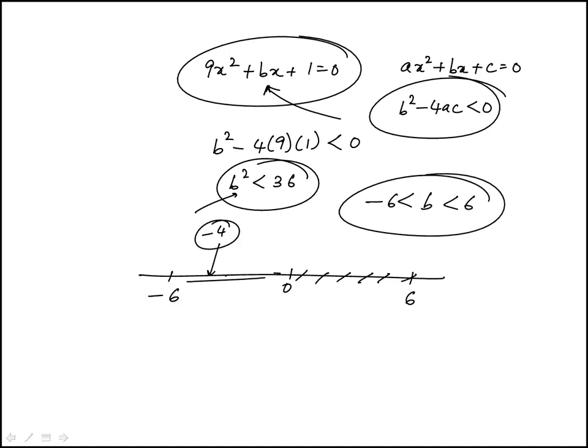If you think of b as minus 4, minus 4 squared is 16, same thing on this side. So b has to fall between minus 6 and 6.